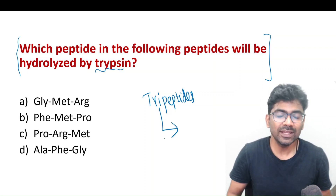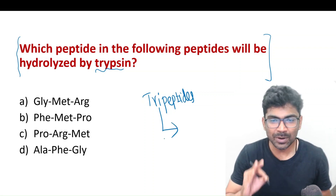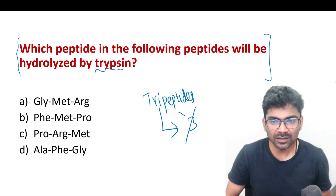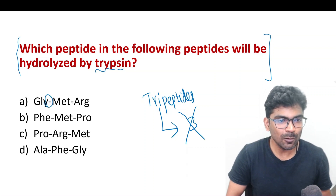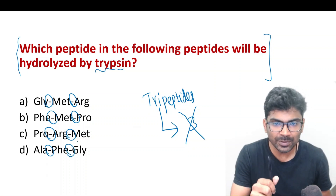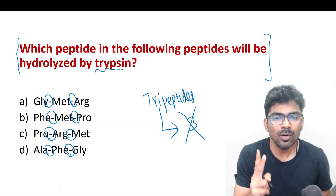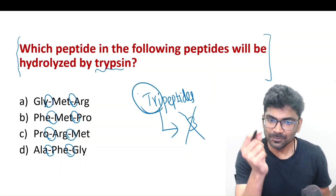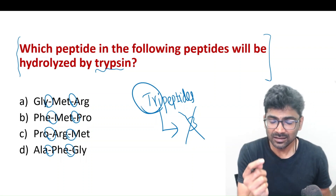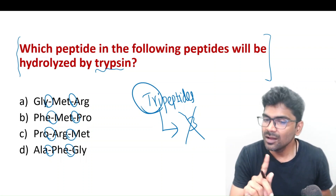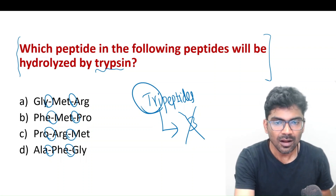First of all, can you tell me how many peptide bonds are there in a tripeptide? If you say three, no. There are just two peptide bonds. There is one peptide bond in a dipeptide, two peptide bonds in a tripeptide. The word di-, tri- indicates the number of amino acid residues, not the number of peptide bonds.